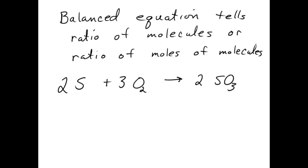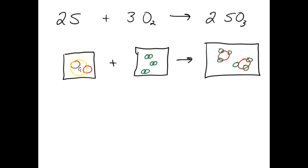We could look at this as particles: two S's, represented by these little red balls here, are going to combine with 3O2 molecules, represented by these little green pairs of atoms, to form two SO3 molecules.